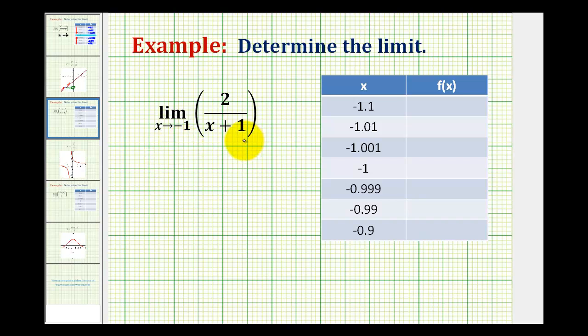We're going to determine the following limit numerically, which means they want us to complete a table of values to determine this limit. So we have the limit as x approaches negative 1 of 2 divided by the quantity x plus 1.